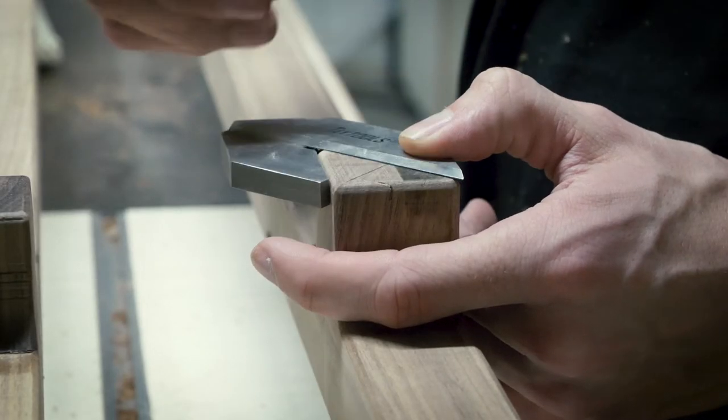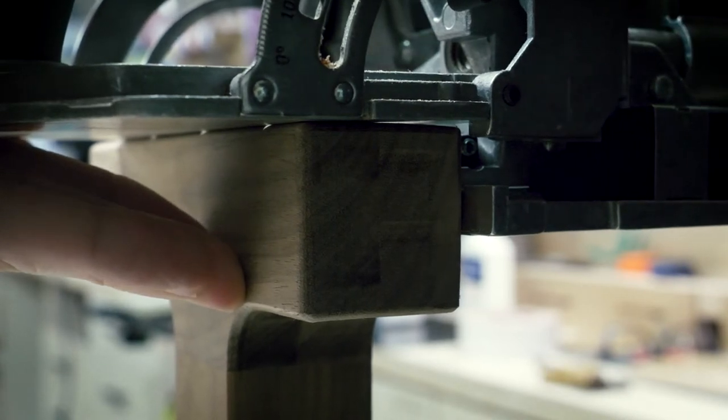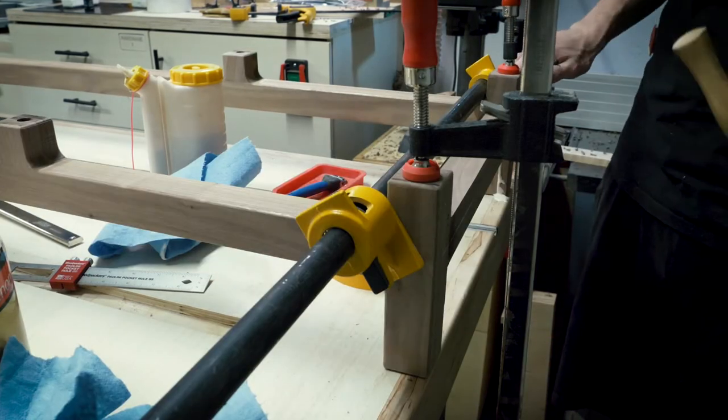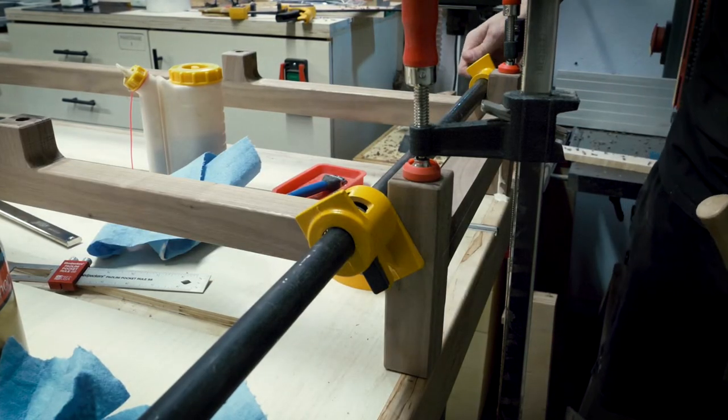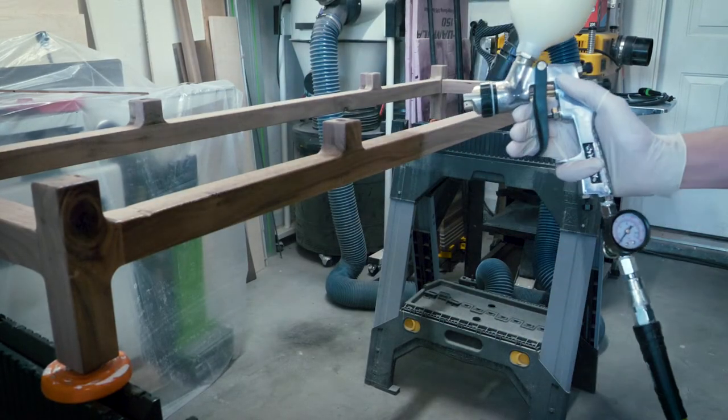I also marked on my joinery and holes where I'm going to attach this leg set to the top before assembly. I once again used dominoes and glue to get everything put together and after everything was dried I was able to sand clean things up and spray with some more lacquer.